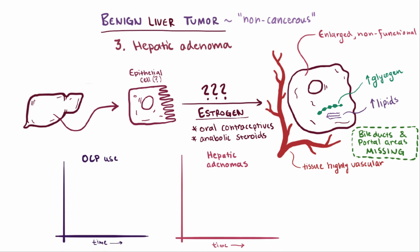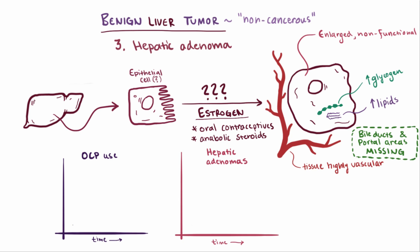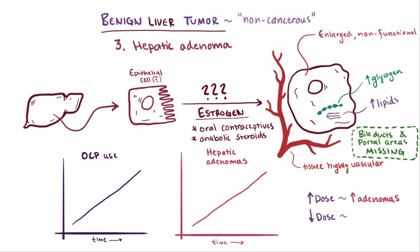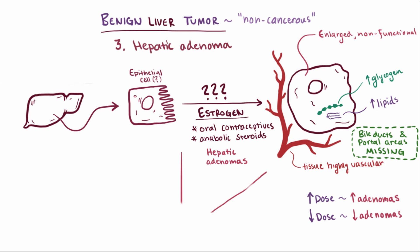Before the introduction of oral contraceptives, or OCPs for short, hepatic adenomas were rarely reported and have increased along with increasing OCP use over time, and are associated more with higher dose regimens. The introduction of lower dose OCPs has resulted in a reduction in cases. That being said, how estrogen influences the development of hepatic adenomas is unclear.